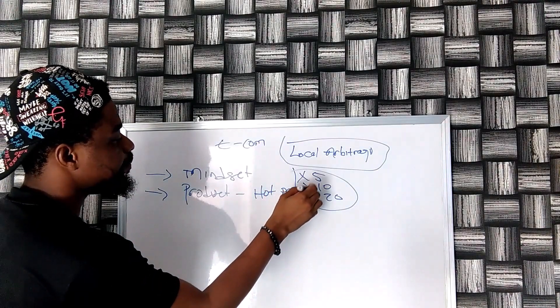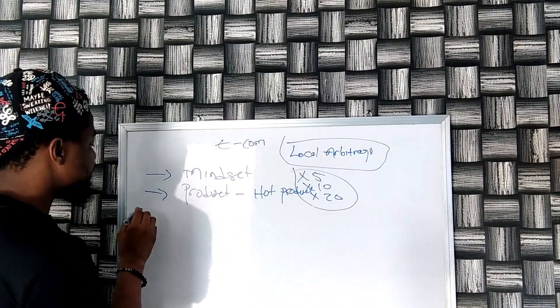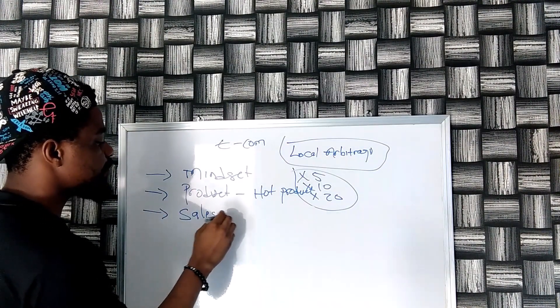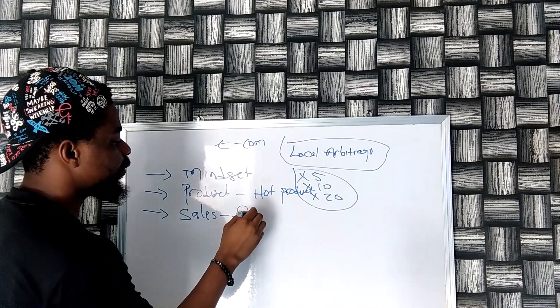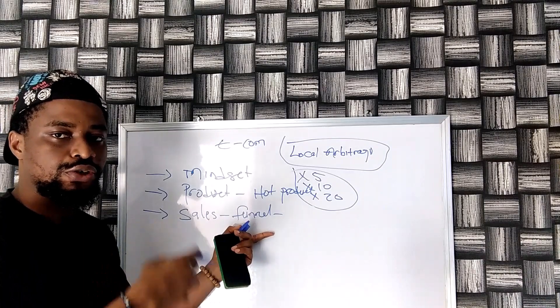Number three, you must have a sales process or a sales funnel. Let me just call it a funnel. This is what takes people through the journey of buying a product. This is technically your store on the internet.